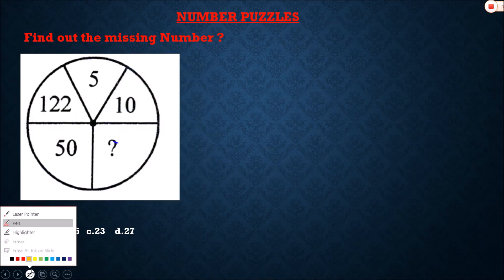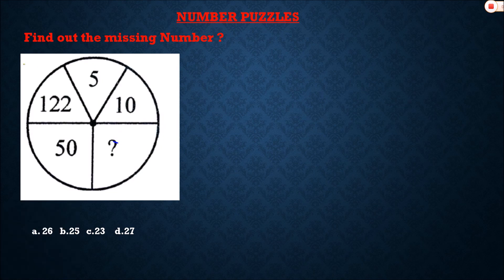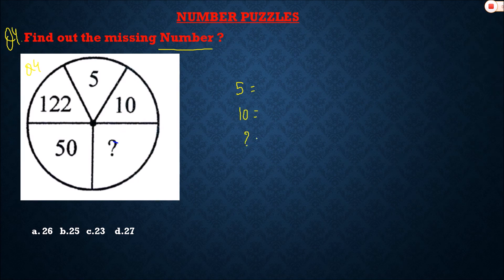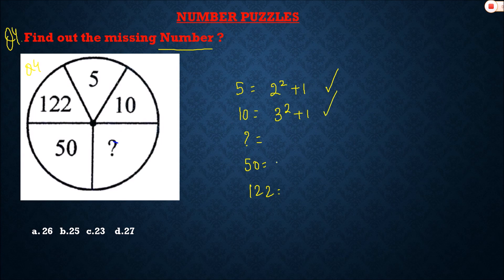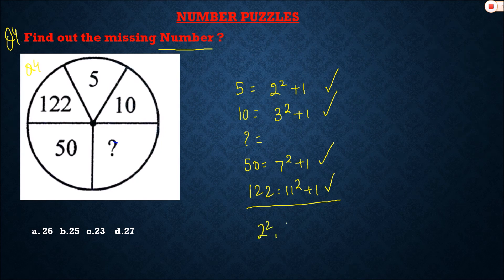Question number four: find the missing number. We have 5, 10, the missing number, 50, and 122. We can write 5 as 2² + 1, and 10 as 3² + 1. Then 7² + 1 equals 49 + 1 equals 50, and 11² + 1 equals 121 + 1 equals 122.